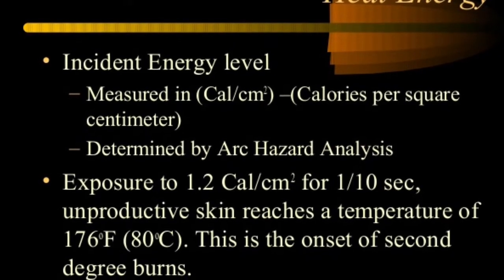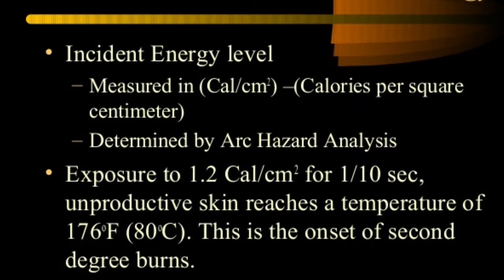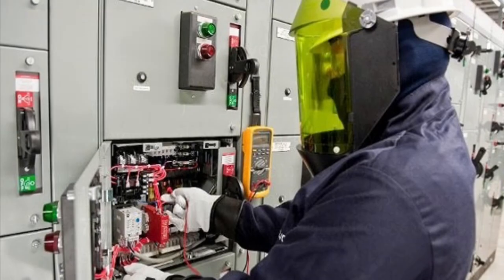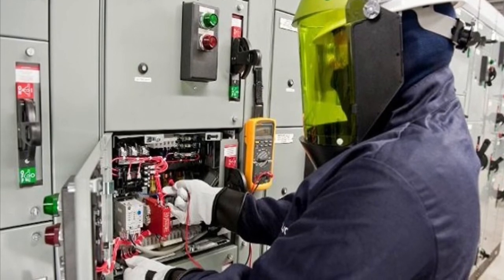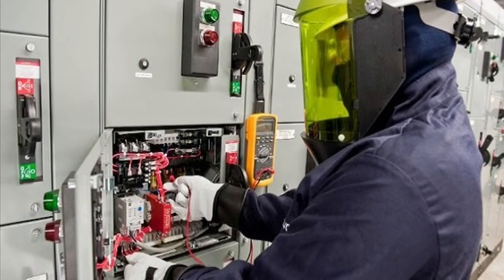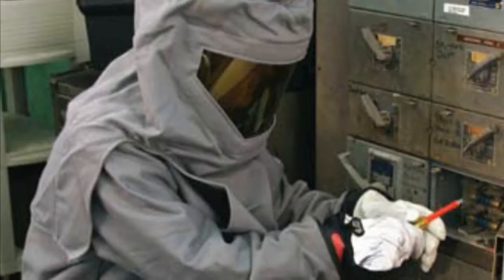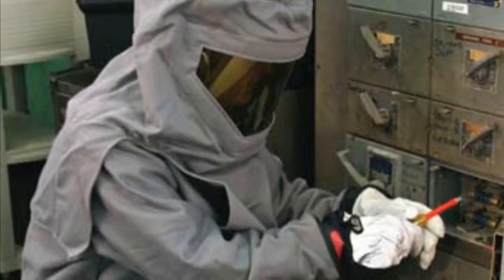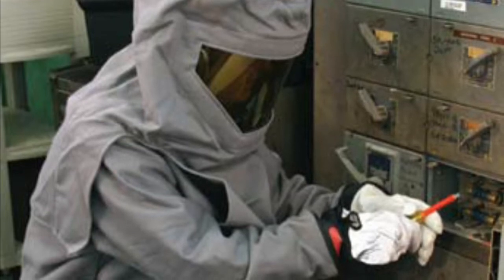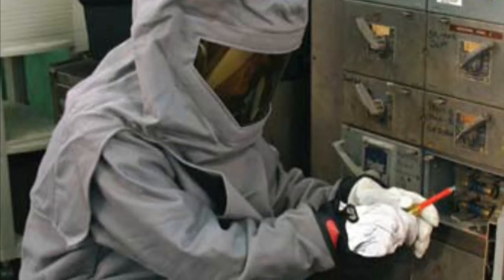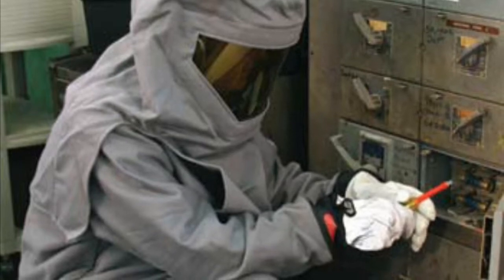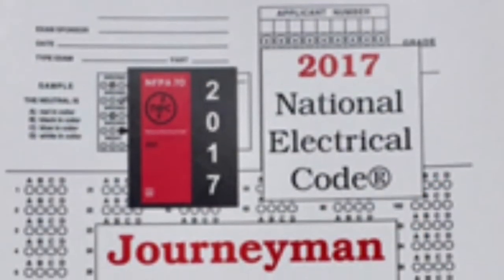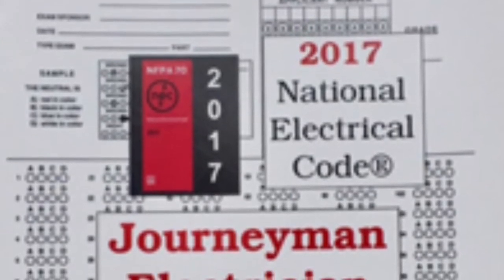Using PPE rated above the calculated incident energy value can raise the probability of the employee being protected. A qualified person is one who has demonstrated skills and knowledge related to the construction and operations of electrical equipment and has received safety training to identify the hazards and reduce the associated risk. An employee could be qualified to perform one work task and not qualified to perform a different work task on that same piece of equipment, or qualified to work on one piece of equipment but not another similar piece.